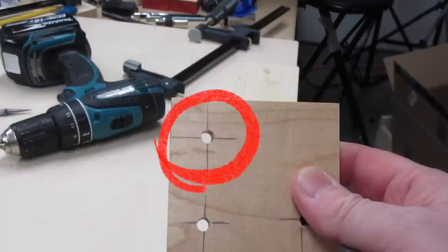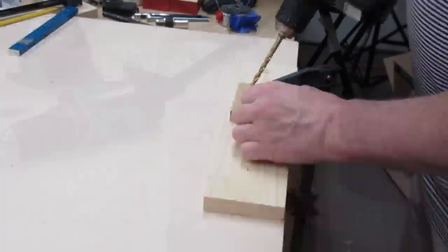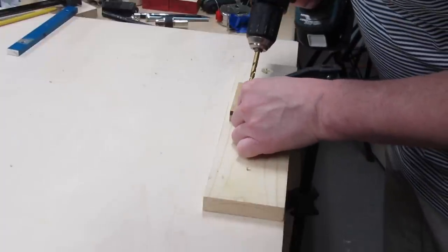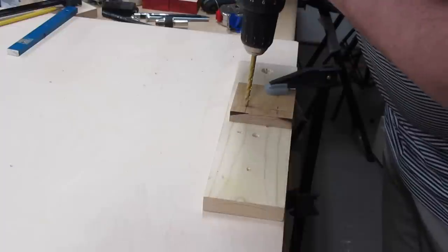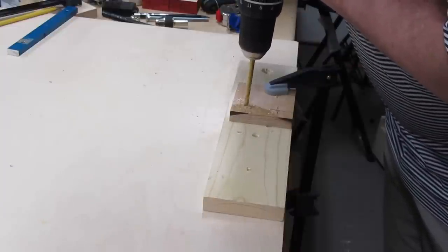Pretty close to the center of the crosshairs, but that's not always the case. Sometimes it's hard to line up this bit on your mark because you may not be able to see the tip of the bit very well. You'll see what I mean when we get to Brad Point bits in just a moment.